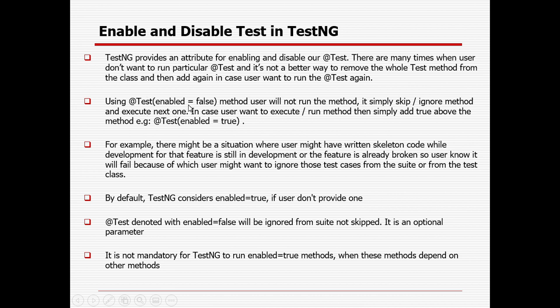Using @Test(enabled=false), the user will not run the method — it will simply skip or ignore the method and execute the next one. That's the syntax you can use: enabled=false. In that case the @Test method will not be run, it will be skipped or ignored. As and when it is required, we can change it back — either remove the enabled=false part or change it to enabled=true.